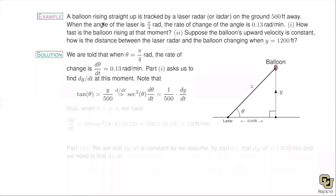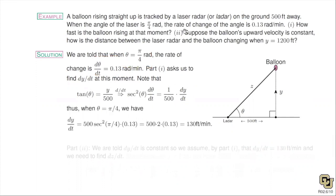We need to know our unit circle: secant of π/4 is the reciprocal of cosine of π/4, which is √2/2, so flipping gives 2/√2 = √2, and squaring gives 2. Then 2 times 500 is 1000, times 0.13 — moving the decimal three places — gives 130 feet per minute. Once you catalog the information, the rest is: find a formula, take a derivative, and solve.